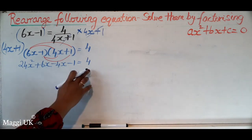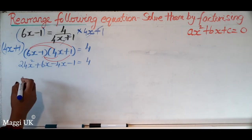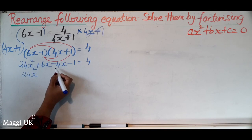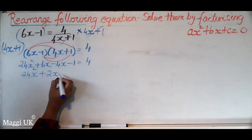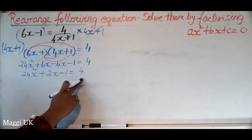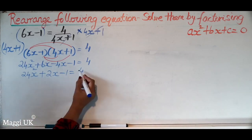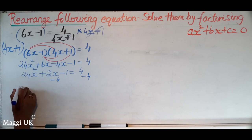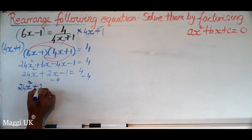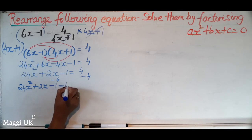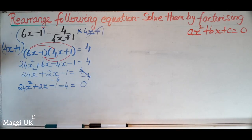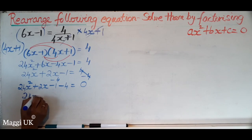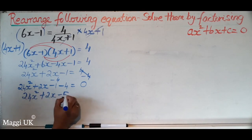Let me simplify first before bringing the 4 across. So 24x squared, and 6x minus 4x becomes plus 2x, minus 1 equals 4. Now we bring the 4 to the other side as minus 4, giving 24x squared plus 2x minus 1 minus 4 equals 0, which simplifies to 24x squared plus 2x minus 5 equals 0.